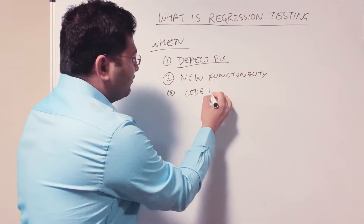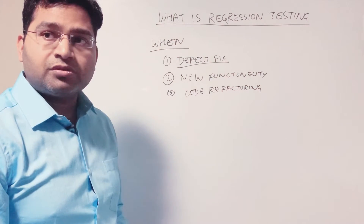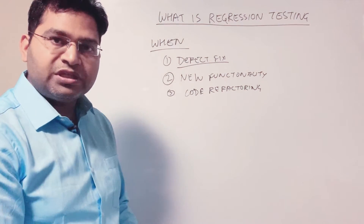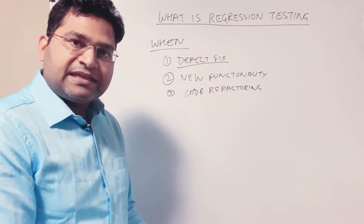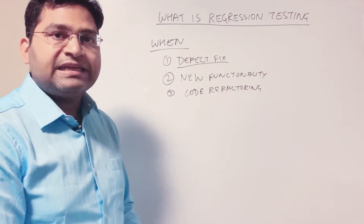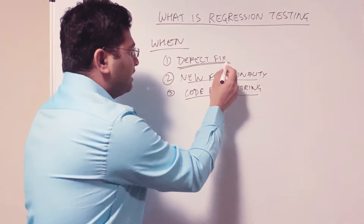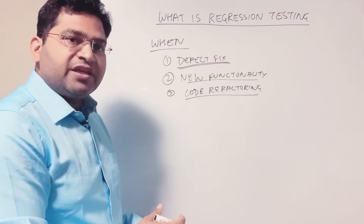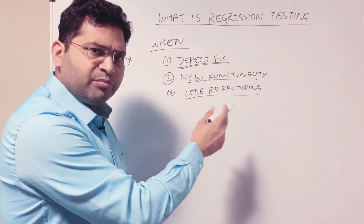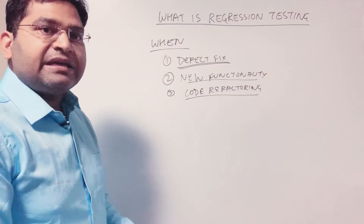The third case is code refactoring, where the development team refactors existing code to improve performance or maintainability. When the code is refactored, you need to pick a set of critical test cases for the application and ensure that the application functionality has not been impacted because of code refactoring, new functionality, or defect fixes. Any verification you do to ensure existing functionality works as expected falls under regression testing.